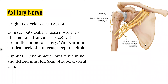Next we've got the axillary nerve — from the posterior cord. It exits the axillary fossa posteriorly through the quadrangular space and runs in association with the posterior circumflex humeral artery. It winds around the surgical neck of the humerus, deep to the deltoid, and innervates the deltoid around the shoulder. It supplies motor function to the glenohumeral joint, teres minor and deltoid muscles, and provides cutaneous innervation to the skin of the superior lateral arm. Remember this slide for when we talk about clinical significance.